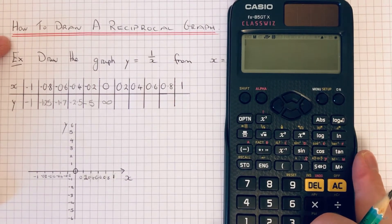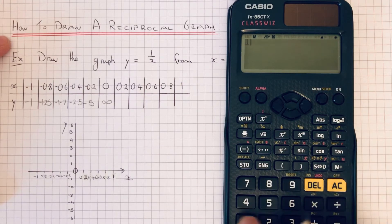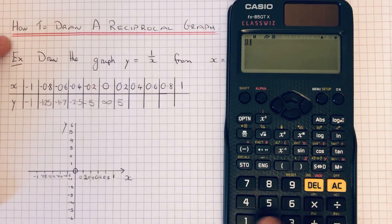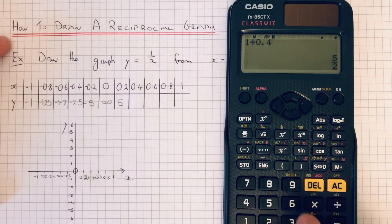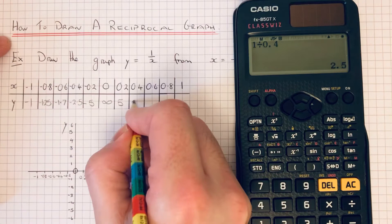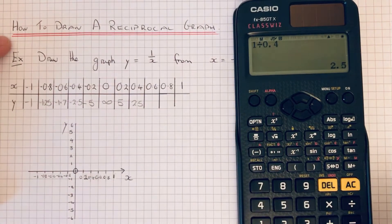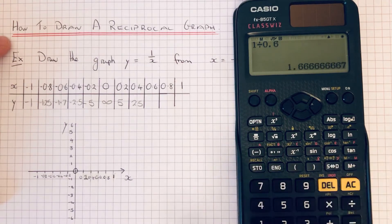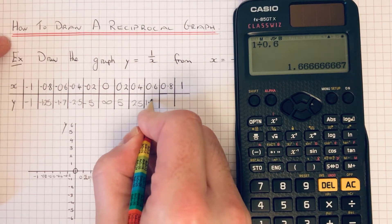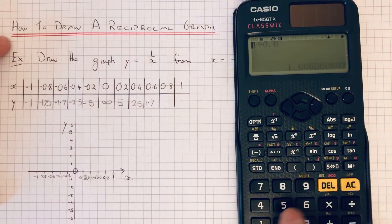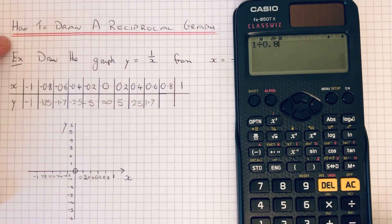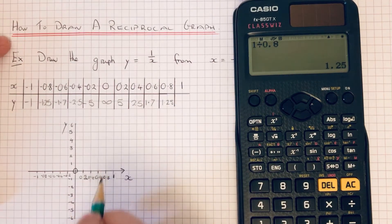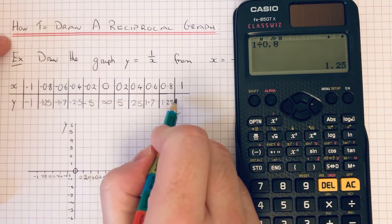So moving on then we've got x equals 0.2 so 1 divided by 0.2 is 5, then we've got 0.4 which is 2.5, then we've got 0.6 that's recurring, we round it to 1 decimal place again so 1.7, 1 divided by 0.8 that's 1.25, and our final one is 1 divided by 1 so that's just 1.